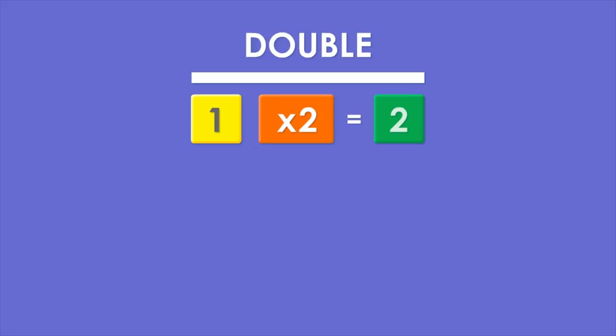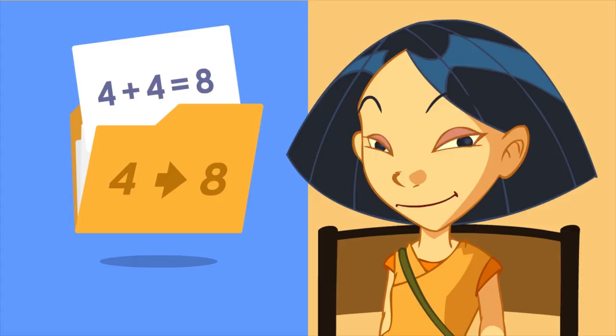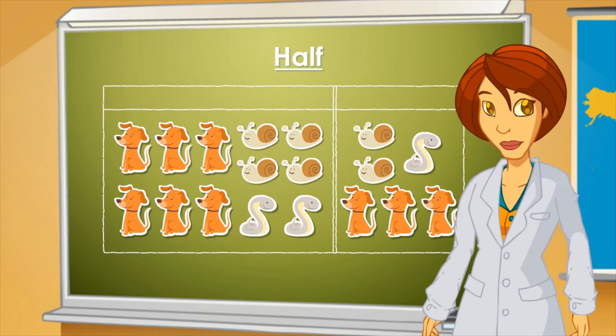The double of one is two, the double of two is four, and the double of three is six. The double of four is eight, because four plus four equals eight. The double of five is ten, because five plus five equals ten. So, if I add up one number twice, I can calculate the double of that number.